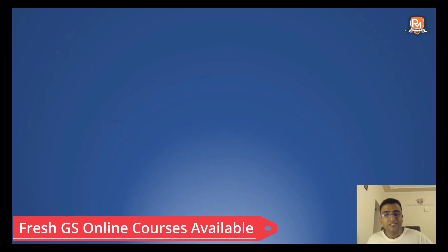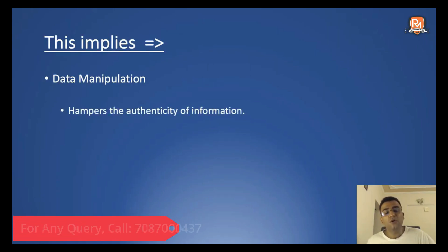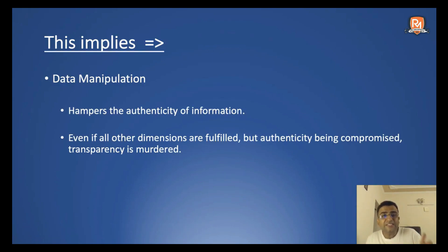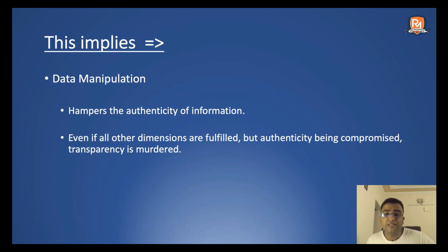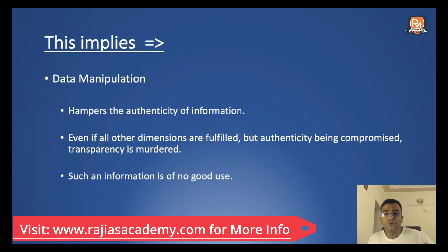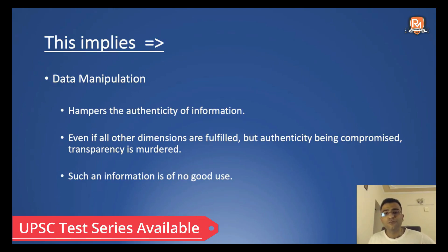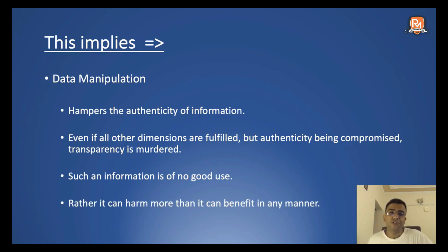This implies that data manipulation hampers the authenticity of information. Even if all other dimensions are fulfilled, if authenticity is hampered because of data manipulation, transparency is murdered — such information is of no good use. An information which is manipulated kills transparency, but at the same time it also brings a lot of harm to the nation.